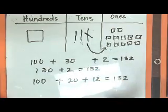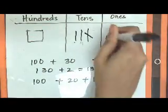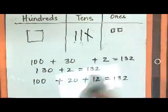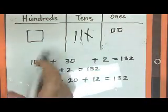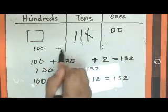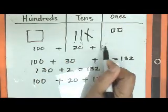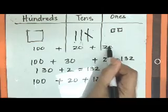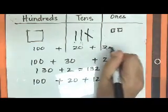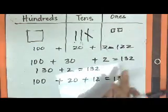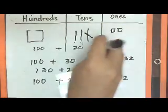We cannot just cross it out because if I were to just cross it out, it would give me a completely different number. This would give me 100 plus 20 plus 2, which would equal 122. And again, my sum should be 132.